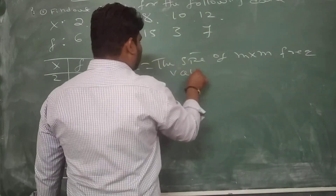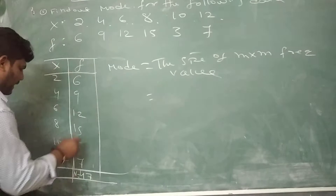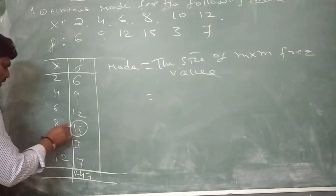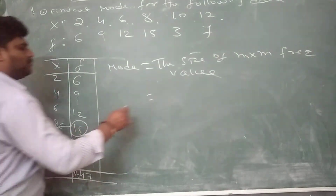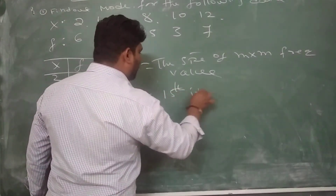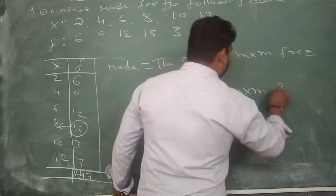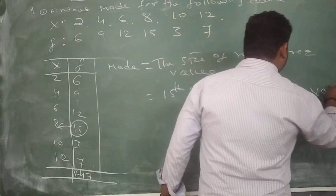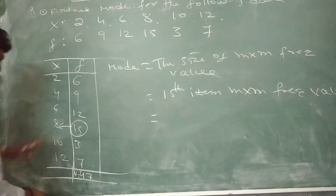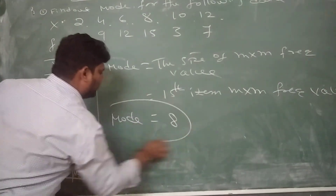The value with the maximum frequency is 15. The 15 items appearing in the same line have the maximum frequency, so the X value — the mode — is 15.